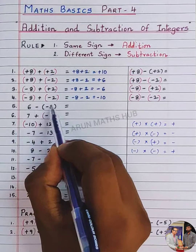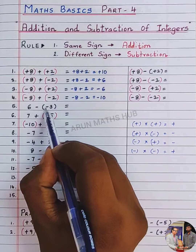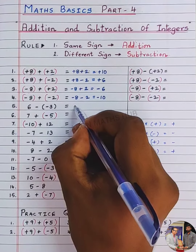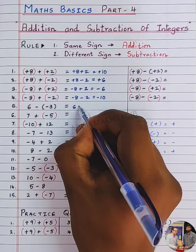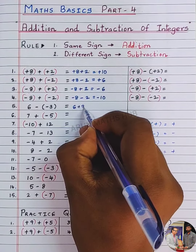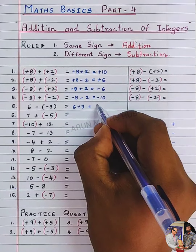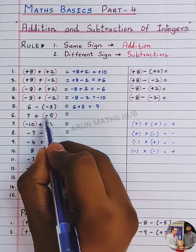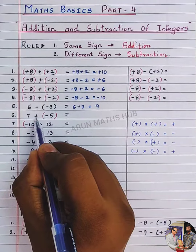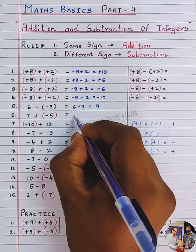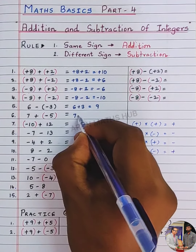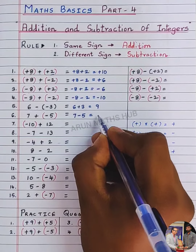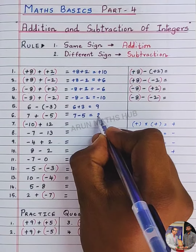Here, in between the numbers you have two signs: minus into minus is plus, so plus 6 plus 3. What is 6 plus 3? It is 9. In between the numbers, multiply the sign: plus into minus is minus, so 7 minus 5. What is 7 minus 5? It is 2.